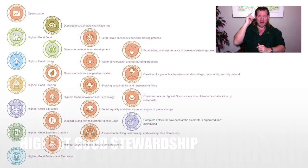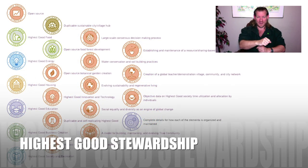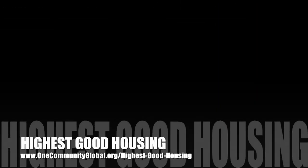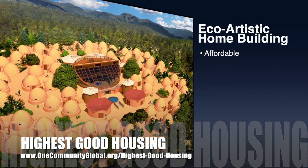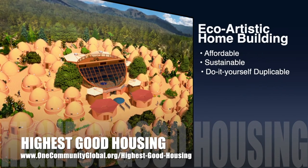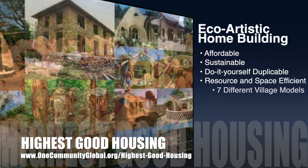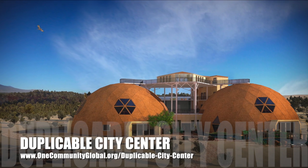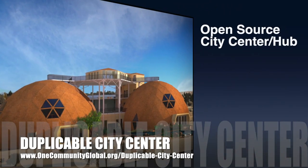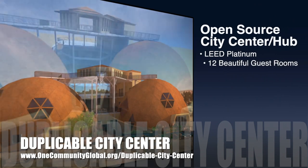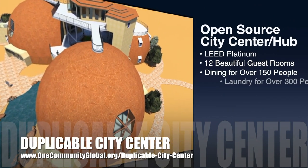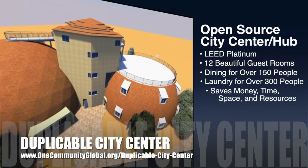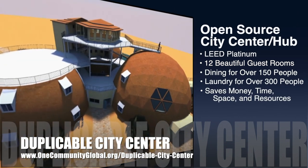The One Community approach to highest good housing is eco-artistic home building that is affordable, sustainable, do-it-yourself, duplicable, resource and space efficient, and consists of seven different sustainably constructed village models. One Community is also creating an open source duplicable city center designed to be LEED Platinum certified, provide 12 guest rooms, dining for over 150 people, and laundry and recreation space for over 300 people — all while saving money, time, space, and resources.